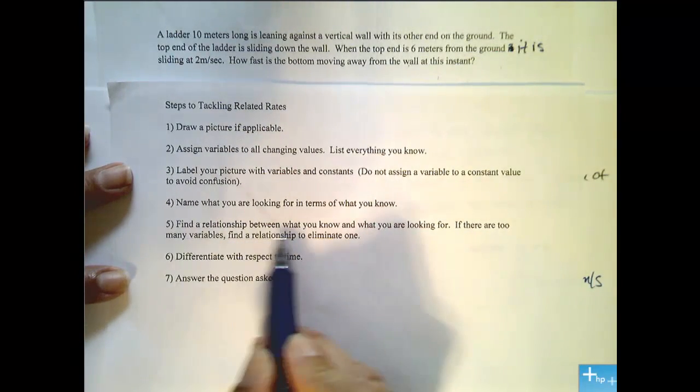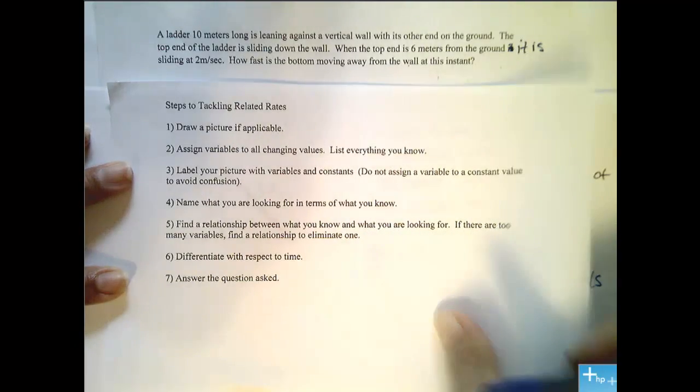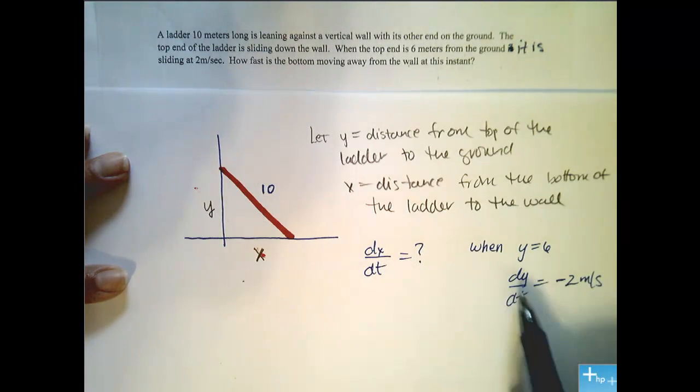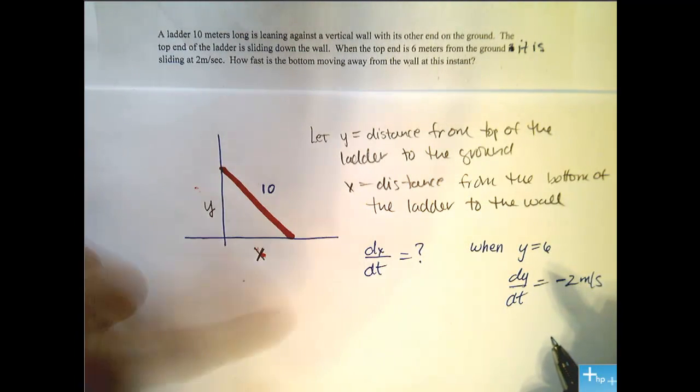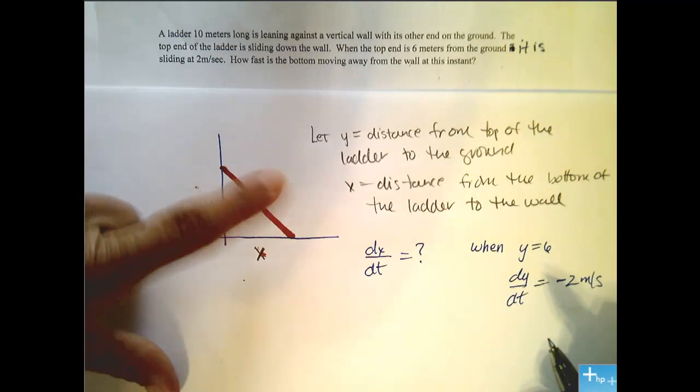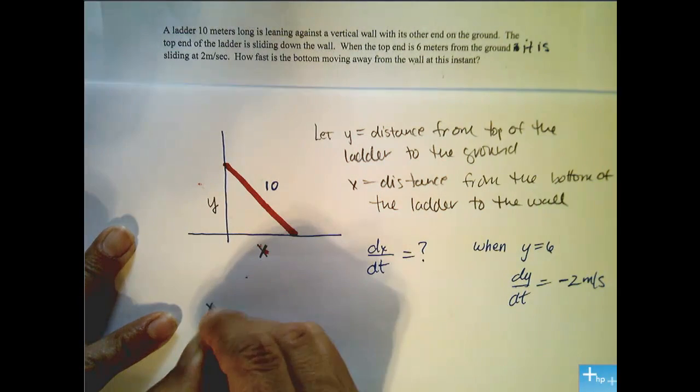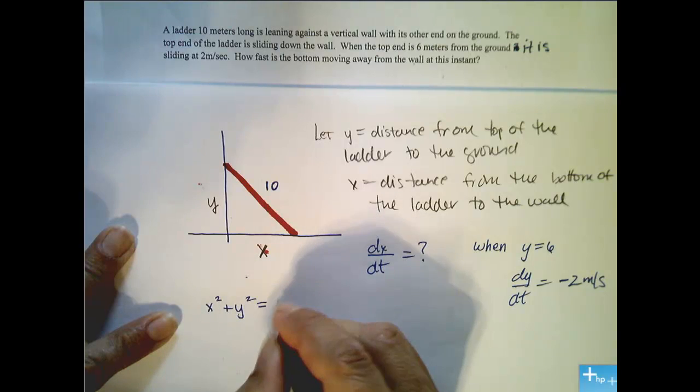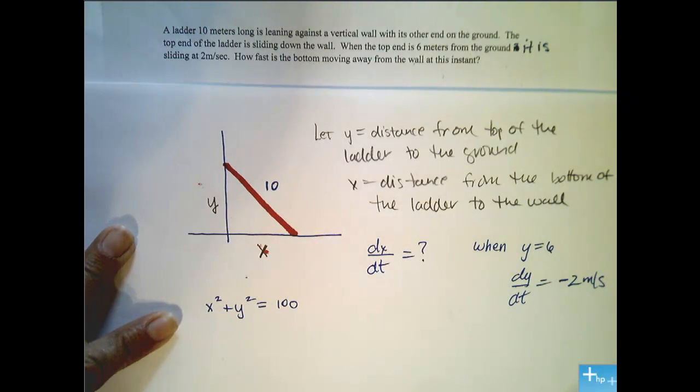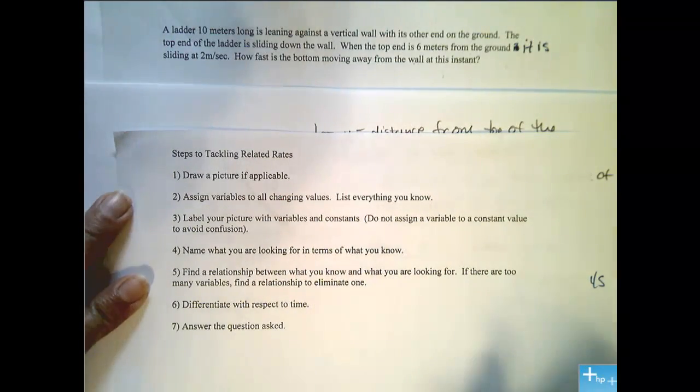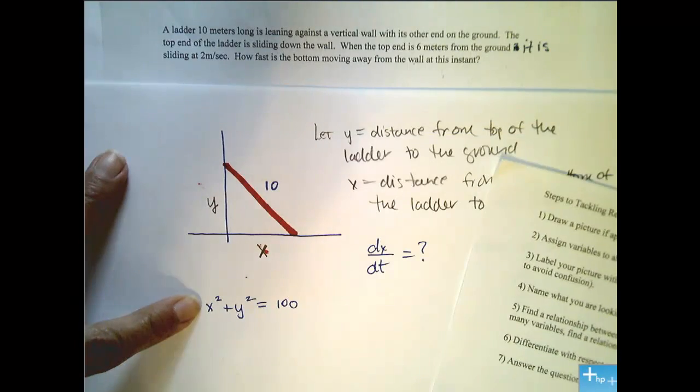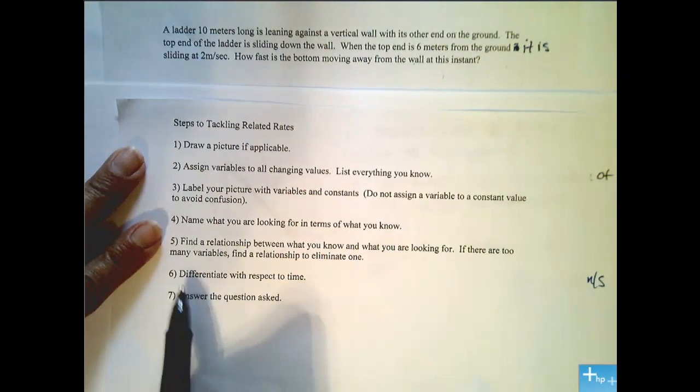Now, find a relationship between what you know and what you are looking for. So we need a relationship between x and y. And we have it over here in our picture. The Pythagorean Theorem describes the relationship between x, y, and 10. So we get x squared plus y squared equals 10 squared, or 100. Now, it says if we have more than two variables, we need to find additional relationships. But we only have two, so we're good to go as is.